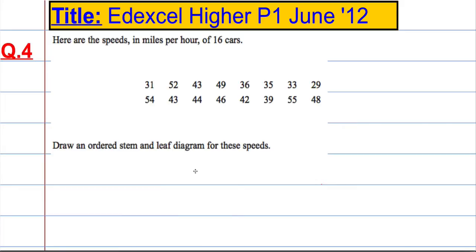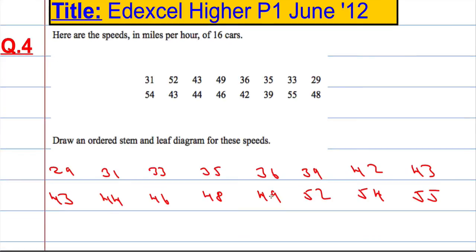I've actually prepared this already to save us a bit of time from writing out a list from smallest to highest. There we have it there, so that's our order of speeds, from 29 up to 55 miles per hour.